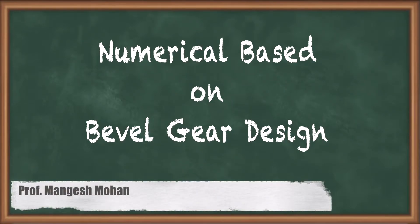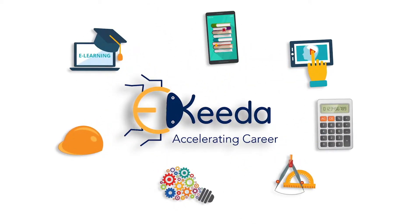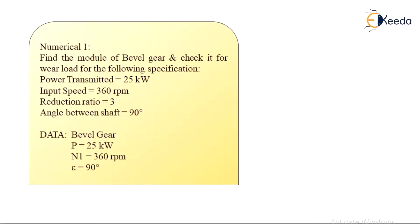Hello students, in this module we will talk about the numerical based on Bevel gear design. The problem statement goes like this: Find the module of a Bevel gear and check it for wear load for the following specifications — power transmitted: 25 kilowatt, input speed: 360 rpm, reduction ratio: 3, angle between shafts: 90 degrees. The gear given is a Bevel gear, power is 25 kilowatt, N1 is 360 rpm, and the angle between the shafts (epsilon) is 90 degrees.